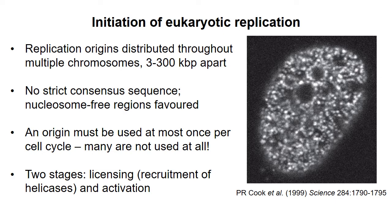It's hard to find eukaryotic replication origins just through sequence analysis, though there seems to be a preference for regions with low nucleosome concentration. To prevent an origin from firing more than once in a cell cycle, initiation is divided into two stages: licensing, during which two helicase complexes are localized to the origin, and activation.